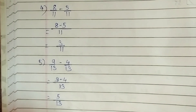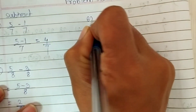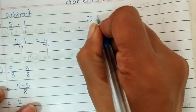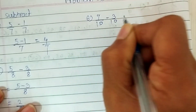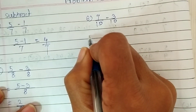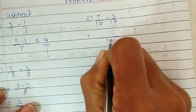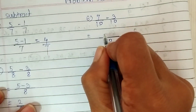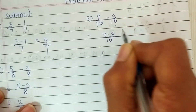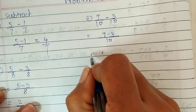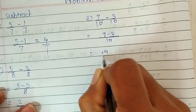Now the sixth question. The question is 7 upon 10 minus 3 upon 10. In this question our common denominator is 10 and our numerators are 7 and 3. Just subtract them and find the difference. 7 minus 3 is 4, so 4 upon 10 is our answer.